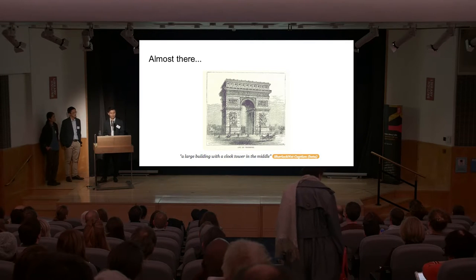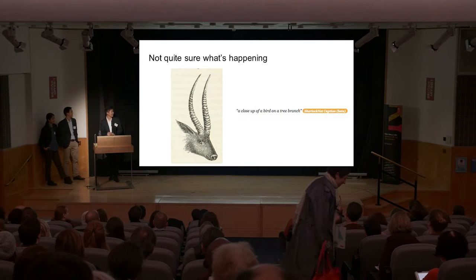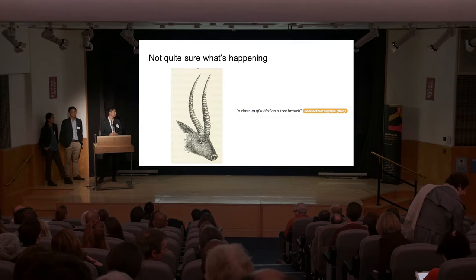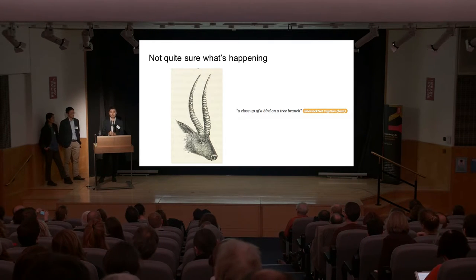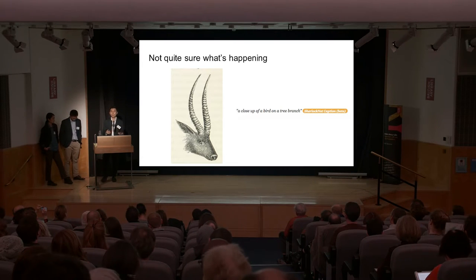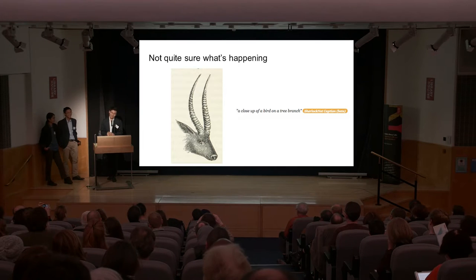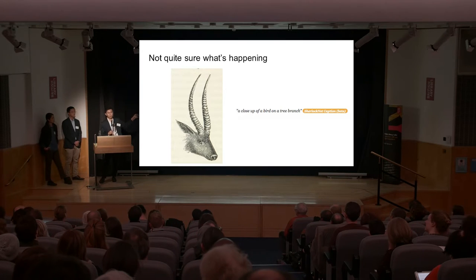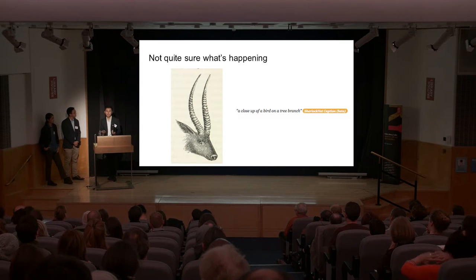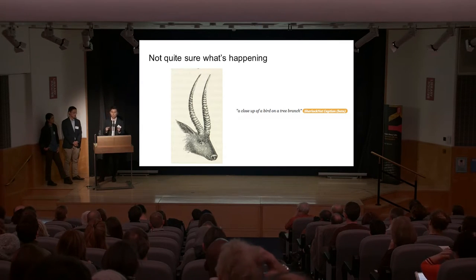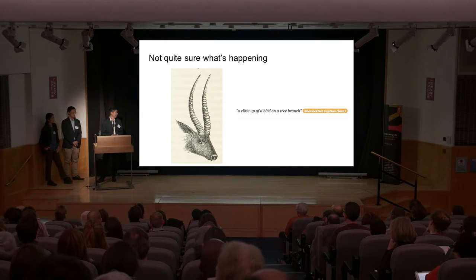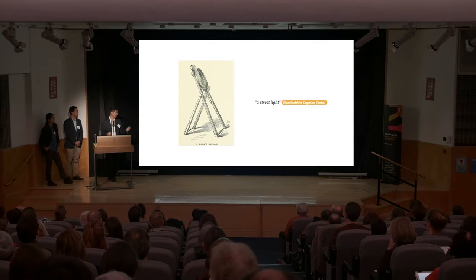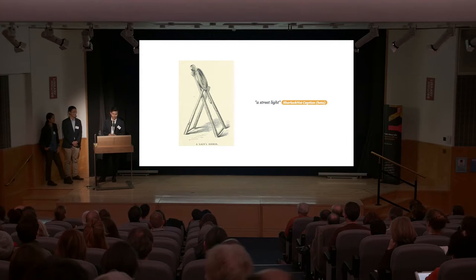This is an image that is definitely not a closeup of a bird on a tree branch, but it's interesting because the neural network probably doesn't know what this animal is. What it does know are birds and tree branches. The horn conceivably could have the same shape as a tree branch, so it tries to match certain parts of this image and finds the closest thing it sees. And sometimes it just labels a lady's mirror as a streetlight.